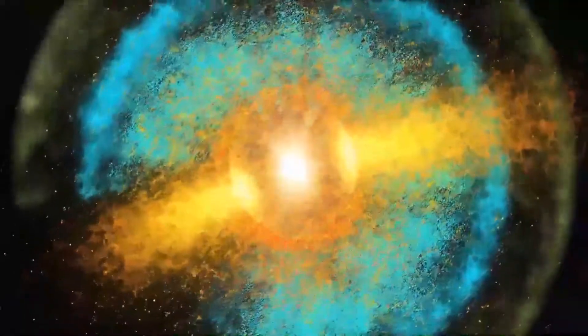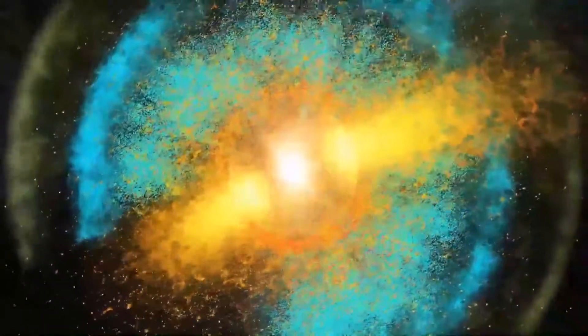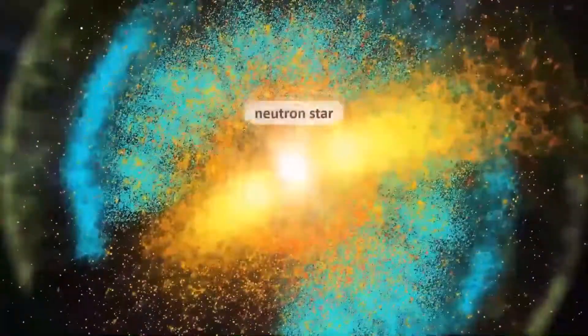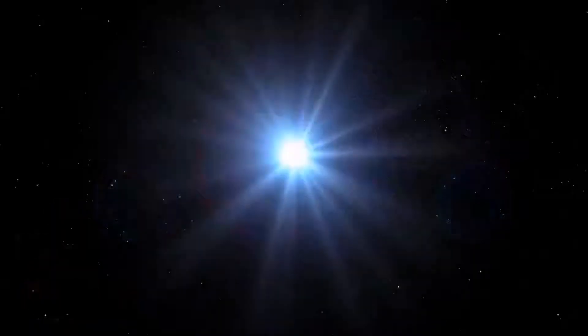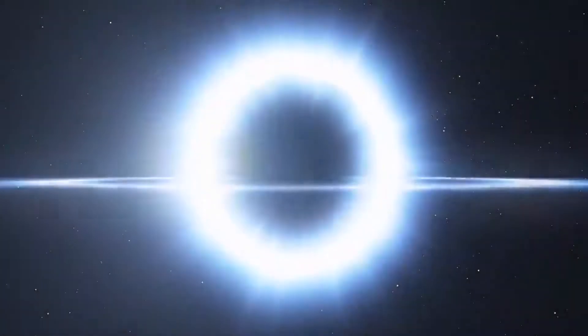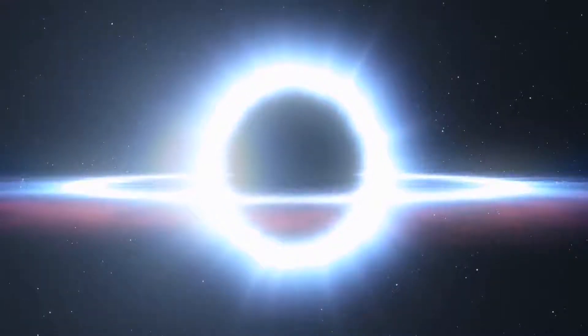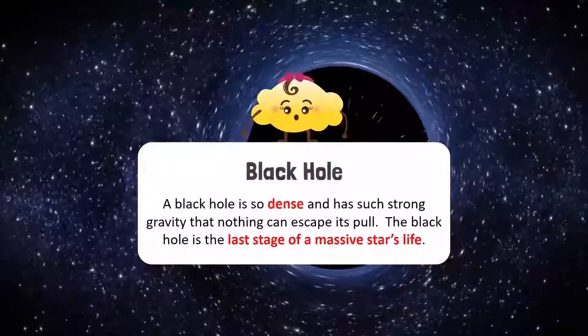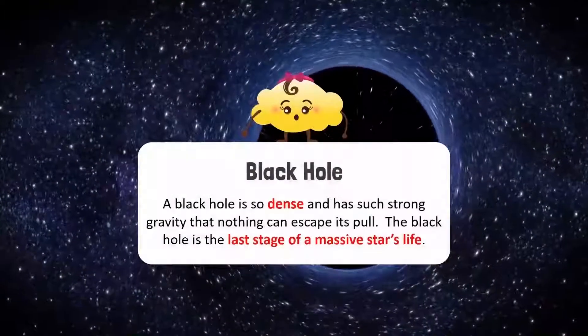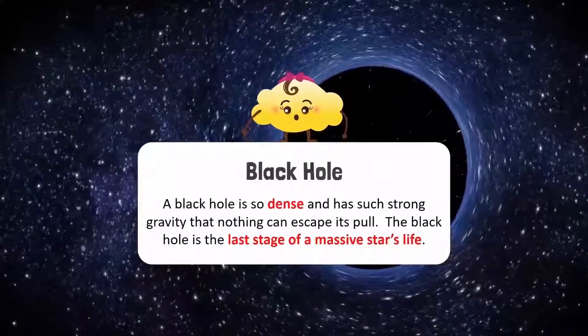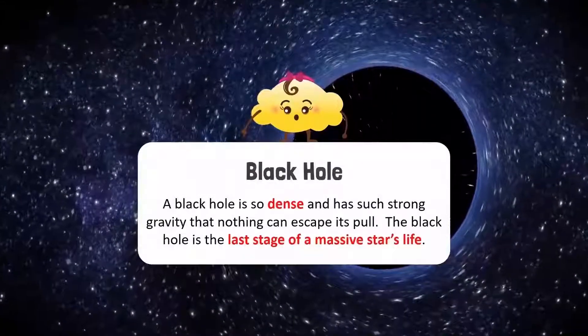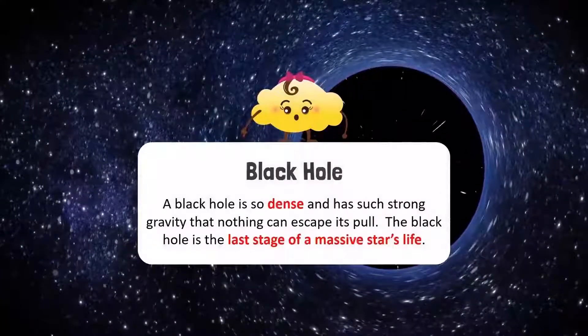This core only contains neutrons. Therefore, it is called a neutron star. A black hole is so dense and has such strong gravity that nothing can escape its pull. The black hole is the last stage of a massive star life.